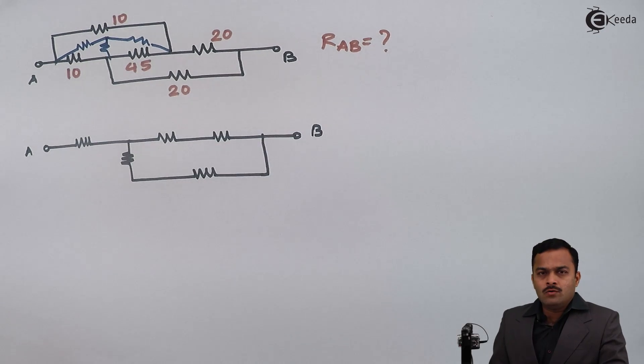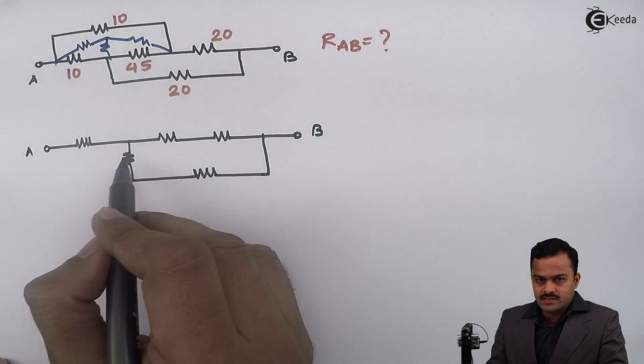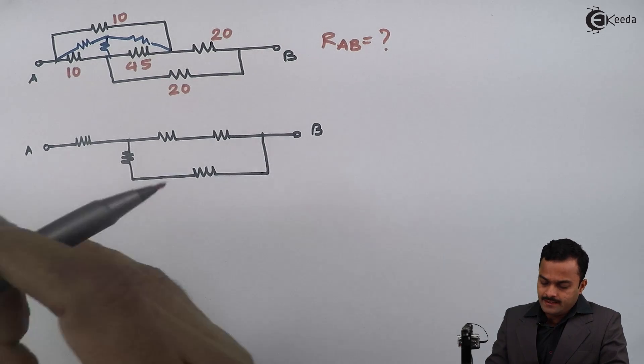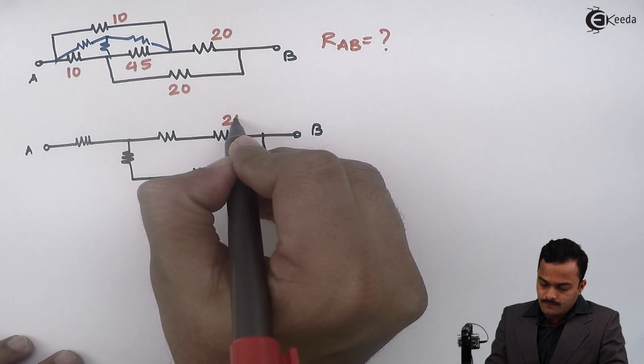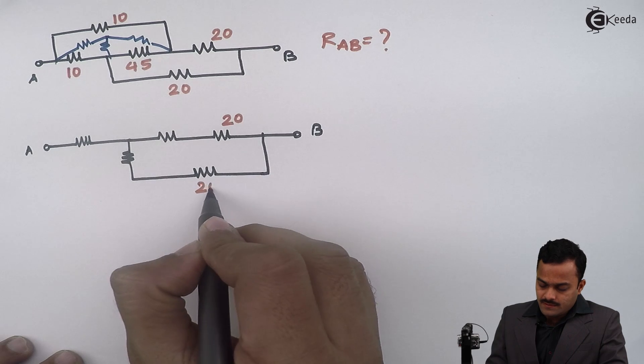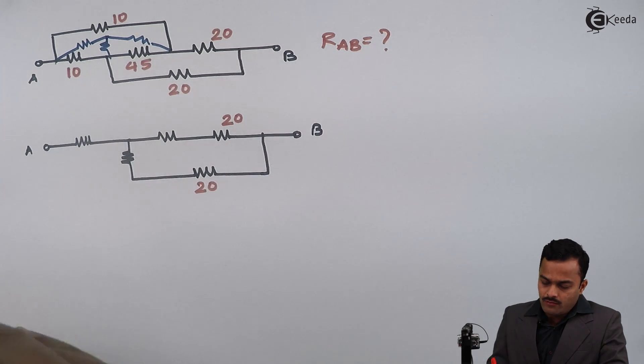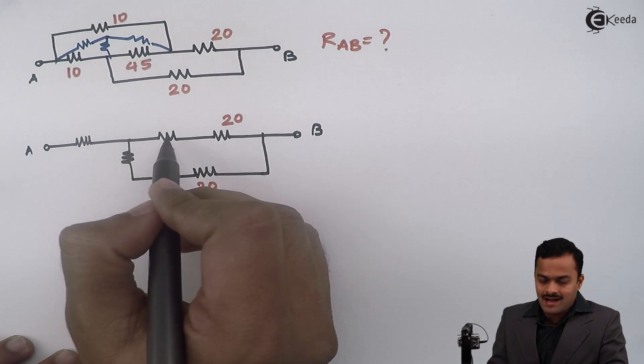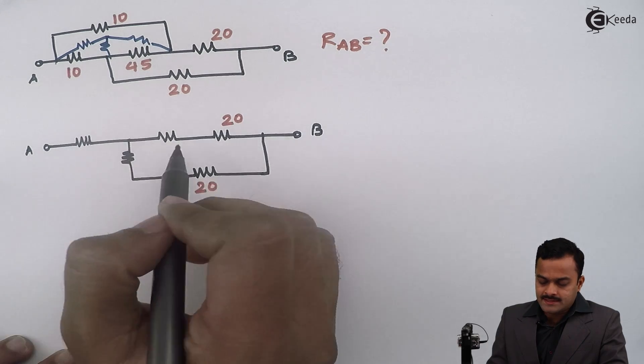And now we will give the value to these resistors. So we are not touching this 20 ohm, same way for this 20 ohm. Now we have to find out values for this star connected resistors.